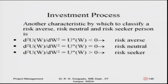Another characteristic by which we can classify a person as risk-averse, risk-neutral, or risk-seeker is by considering the second derivative of the utility function. If the second derivative is less than zero, it is a risk-averse person; if it is equal to zero, the person is risk-neutral; and if it is greater than zero, the person is a risk-seeker.